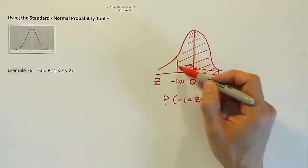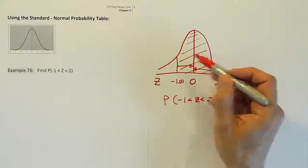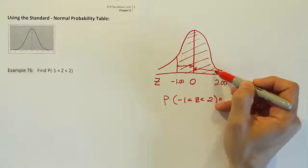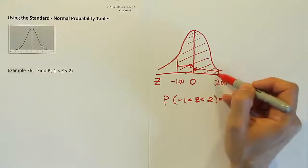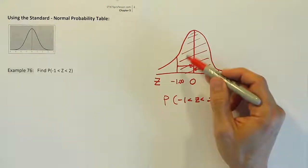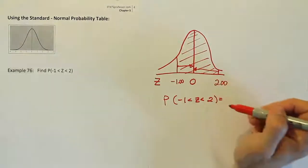Now, if you think about it, my whole shaded area is made up of two parts, this area and this area. If I get this from the table and I get this from the table, I have the two parts that make up my shaded area. If I simply add those two numbers together, I should get the total area under the curve.